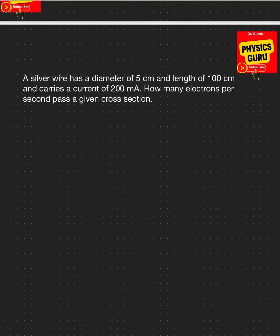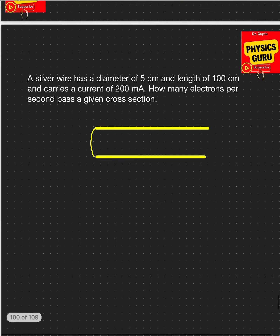Good morning everybody, in this video I will talk about how to find out the electrons per second through a wire on a given cross-section area. So for example, we have a wire here and it has a certain cross section area.